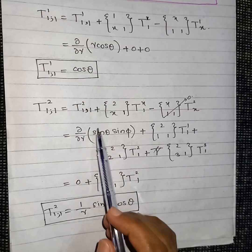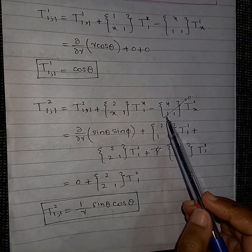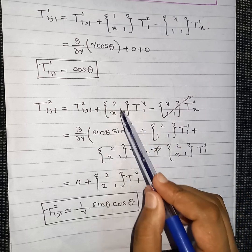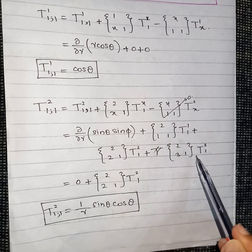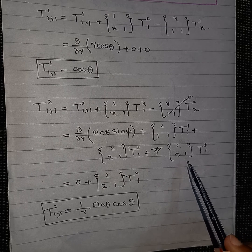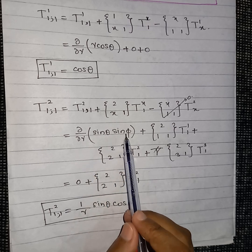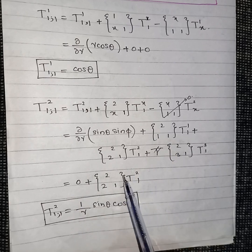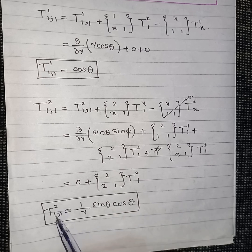The partial derivative of t_{21} with respect to r is computed. There are no non-zero Christoffel symbols involving 1-1, so that term vanishes. Substituting the dummy variable x = 1, 2, 3 in summation form and noting that t_{21} has no r dependence, the partial derivative with respect to r is zero. The only non-zero Christoffel symbol here has value 1/r, giving t²₁;₁ = sin(theta)cos(theta) times 1/r, yielding the result shown.